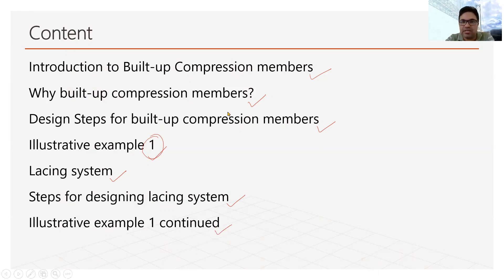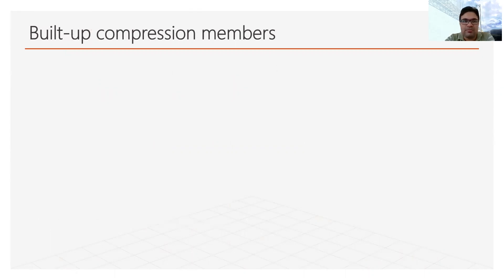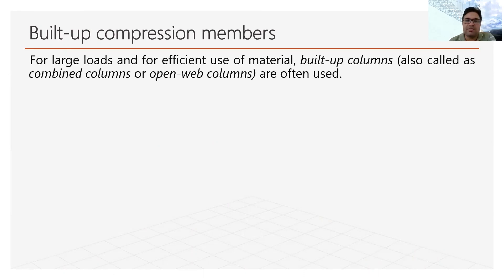So this is the content we will cover in this lecture. Now talking about the built-up compression member — I have already discussed what a built-up section is. Built-up sections are those sections which are composed of two or more sections. They are used when there is a large load, and for the efficient use of material we use built-up sections. As we are talking about the compression member, we can say built-up columns.